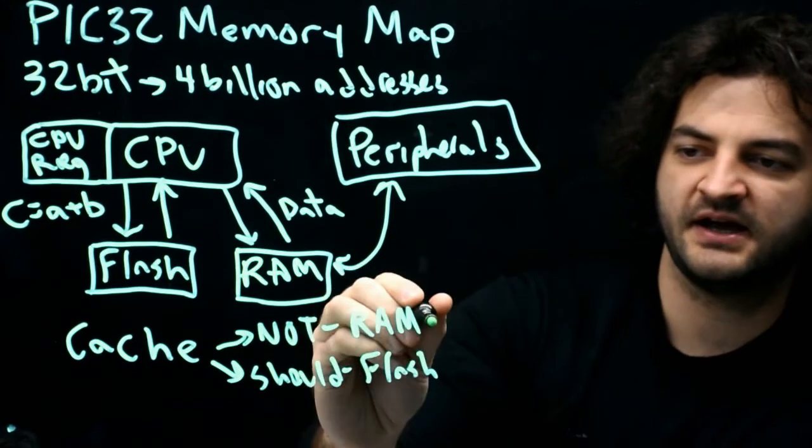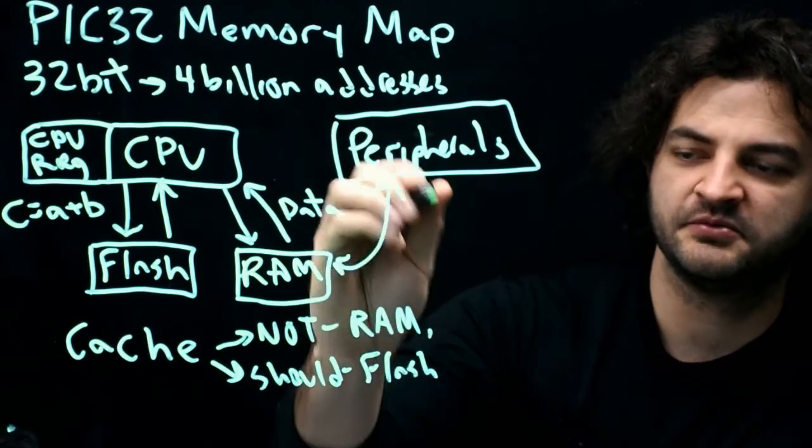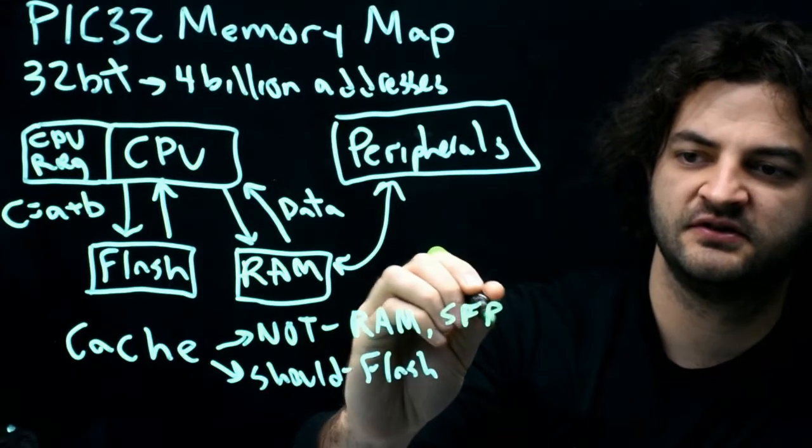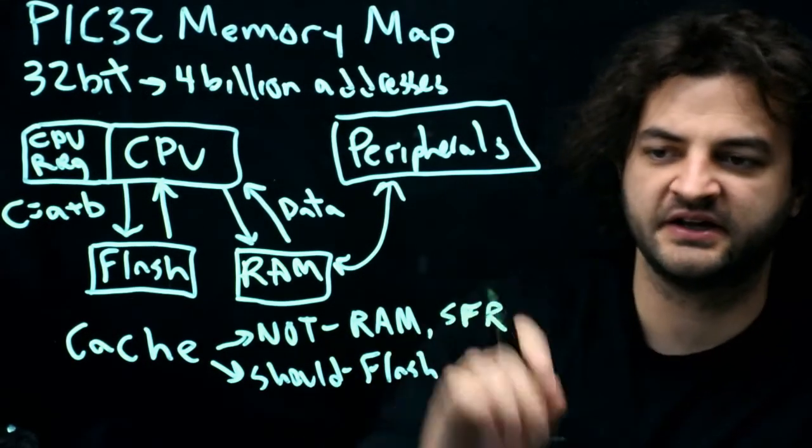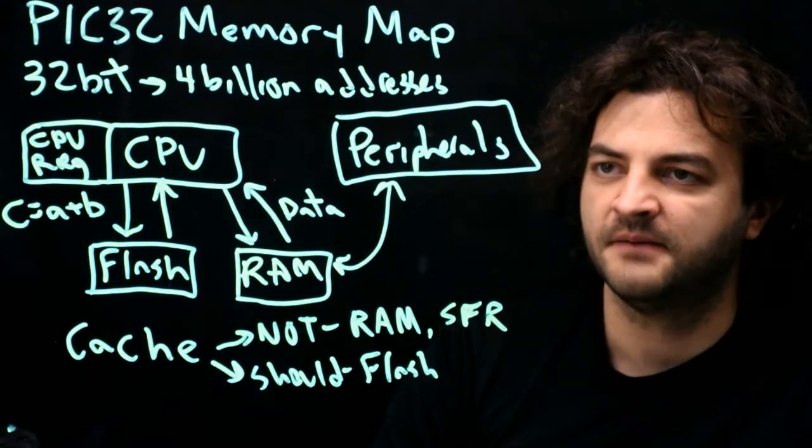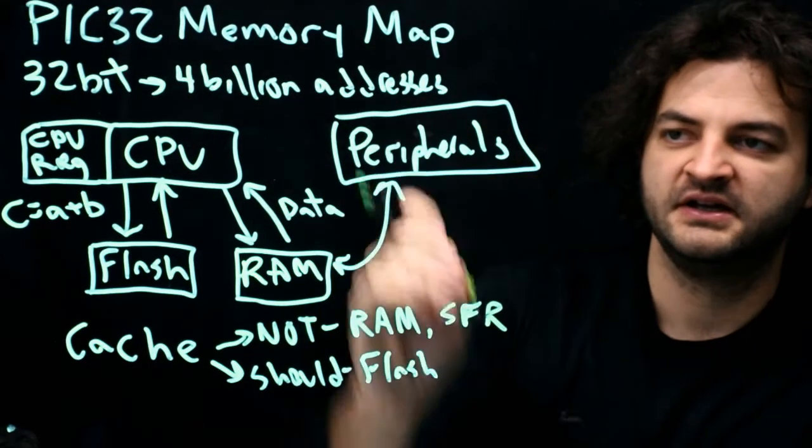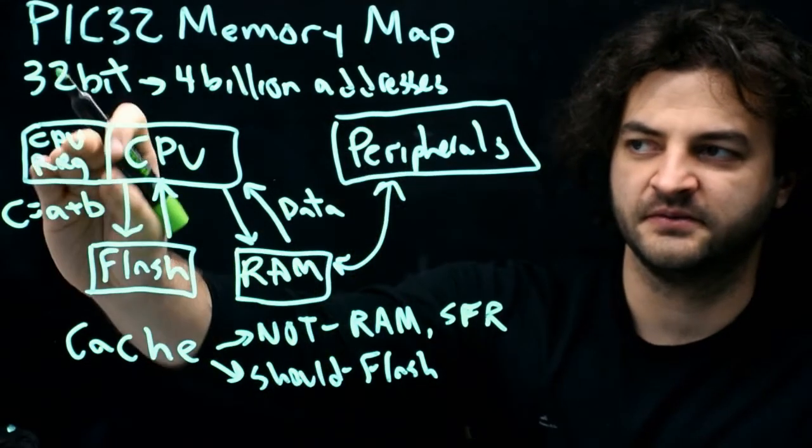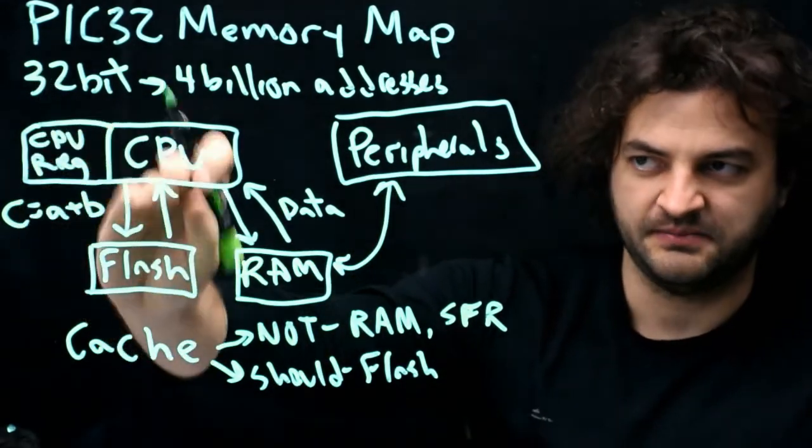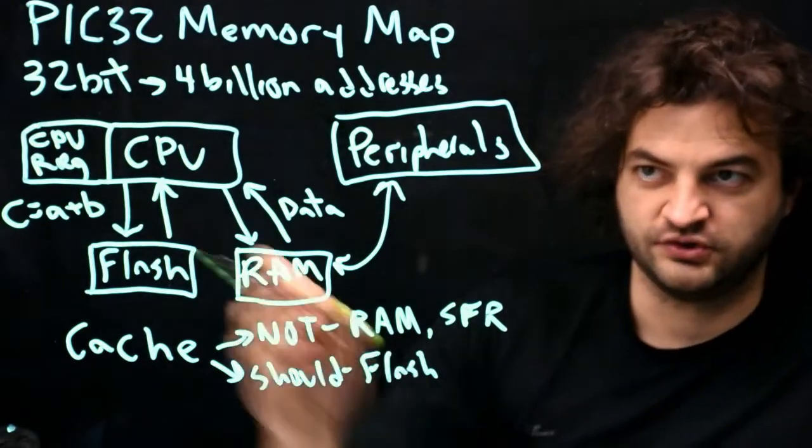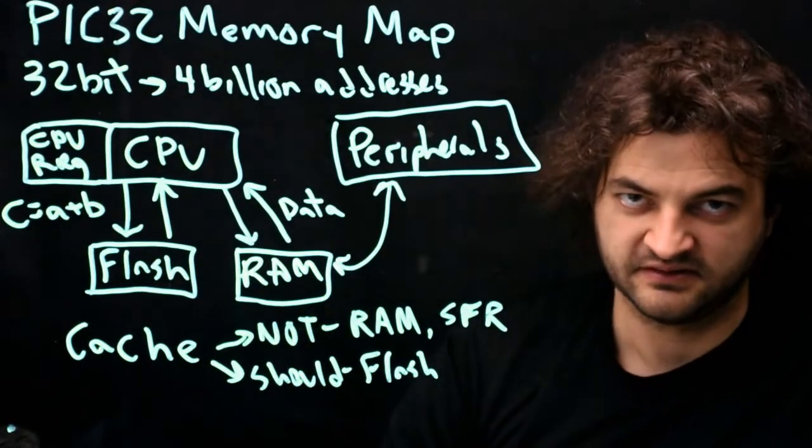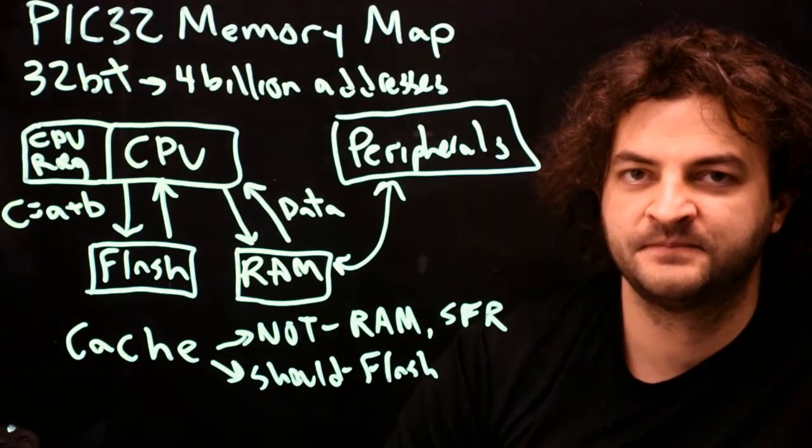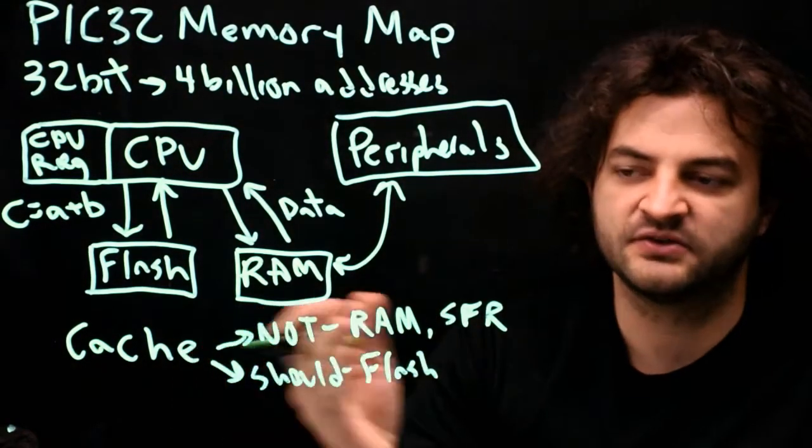You should definitely not cache anything to do with the peripherals, which we call special function registers. We'll have another video specifically on SFRs soon. But anything that the peripherals are doing could change on an instance notice. So don't take their value, store them in the cache, and then keep operating on them. Every time you need to use an SFR, you should go read it again, which might be slightly slower, but at least it's the most recent value.